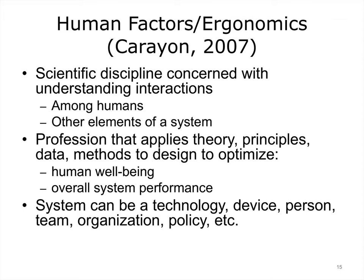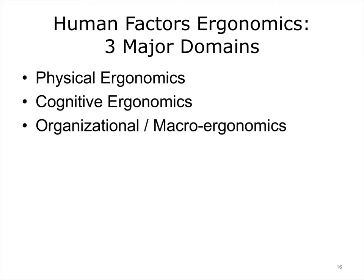As we discussed previously, human factors is a profession that applies theory, principles, data, and methods to design in order to optimize human well-being and overall system performance. Unlike HCI, a system does not merely refer to a computing system. It may be a device, person, team, organization, or policy, to name a few. Ergonomics is broadly conceived as the study of work and factors that affect it. The term is sometimes used interchangeably with human factors. We can characterize three major domains: physical ergonomics, cognitive ergonomics, and organizational or macroergonomics.